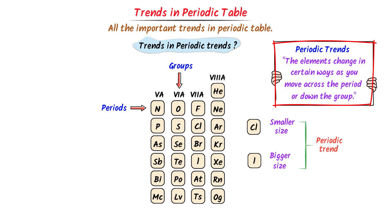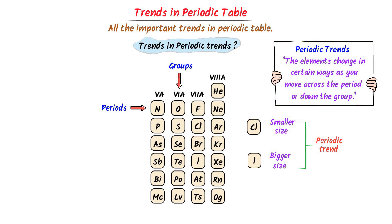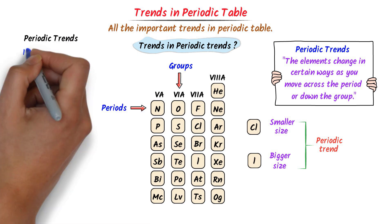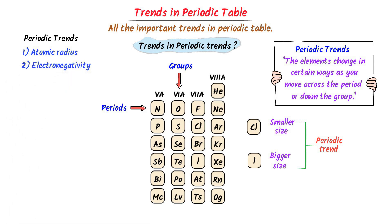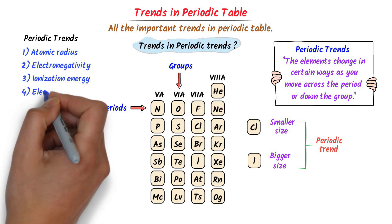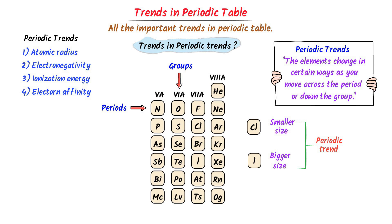The elements change in certain ways as you move across the period or down the group — this change is called periodic trends. Remember that there are four important trends in the periodic table: atomic radius, electronegativity, electron affinity, and ionization energy. Note down these four important trends.